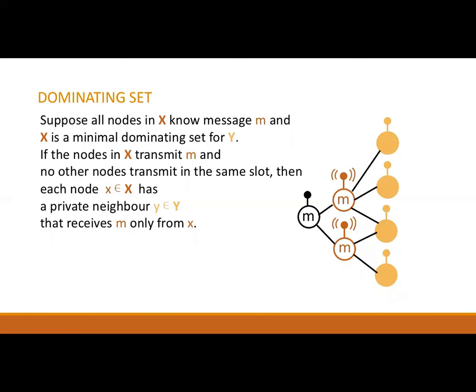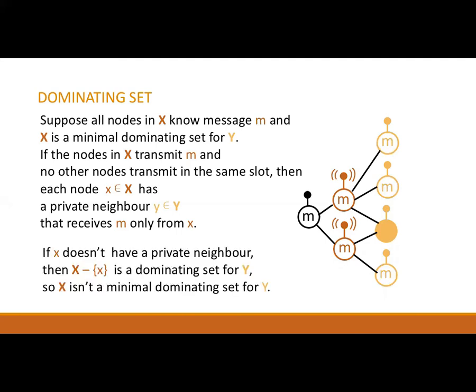Why are minimal dominating sets useful for radio broadcast? They have the following nice property. Suppose that X is a minimal dominating set for Y, and all nodes in X know the source message. Consider a slot in which only the nodes in X transmit. Then for any node x in X, there is some node y in Y that receives the source message from x — called a private neighbor of x. This property holds because if some node x in X has no private neighbor in Y, then removing x from X still leaves a dominating set for Y, contradicting minimality.